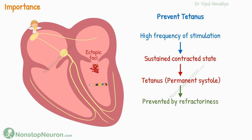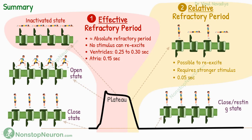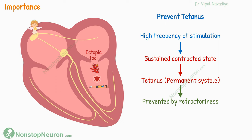So, this was all about the refractory period in the heart muscles. To summarize: the refractory period of the cardiac muscle refers to a short period of time when the heart muscle cells become temporarily unresponsive to electrical signals. The absolute refractory period is seen for most of the duration of the plateau, and the relative refractory period is seen for a short time after that. The refractoriness prevents stimulation of heart muscle cells by ectopic impulses, and it also prevents tetanus of cardiac muscle.